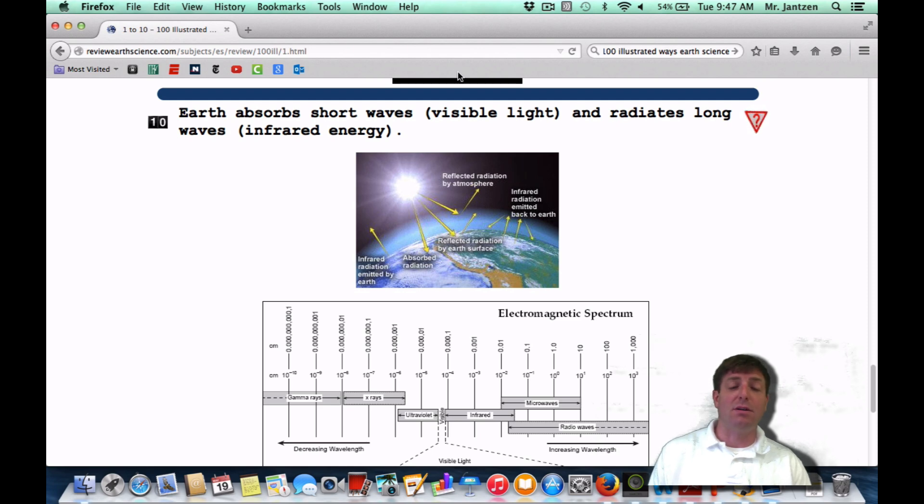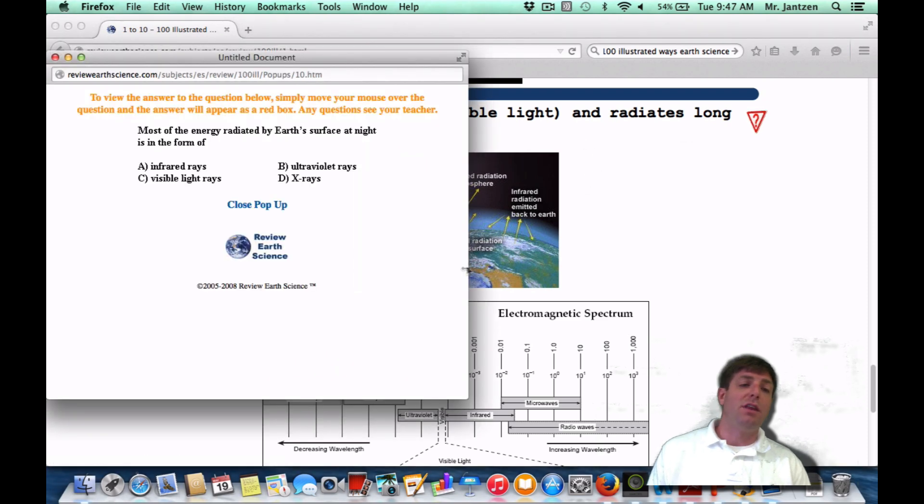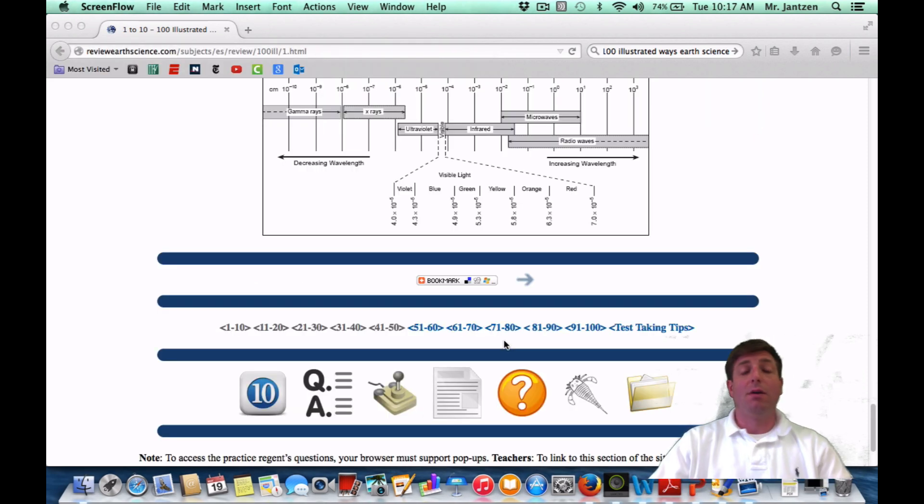Some of that escapes, though. So if you're going to see this as a Regents question, it's going to ask you most of the energy radiated by the Earth's surface at night is in the form of what? So at night, that means it's getting re-radiated, so it's going to be heat energy or infrared rays. You have to know that heat means infrared.